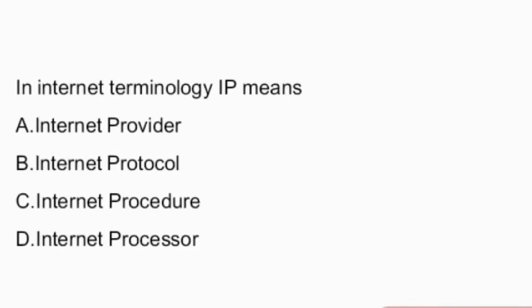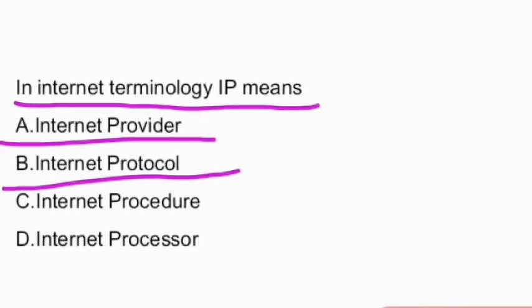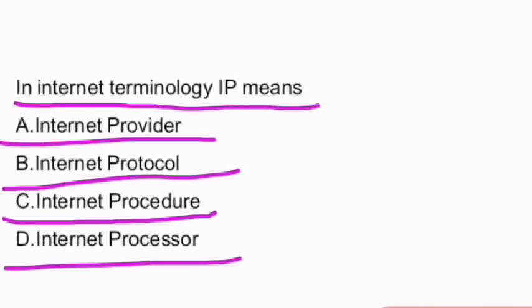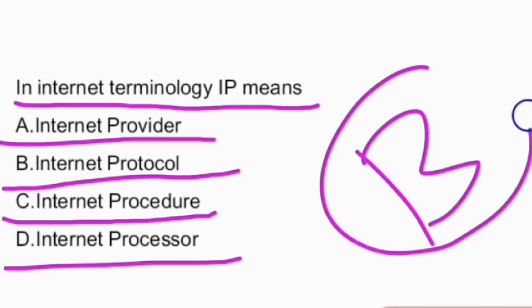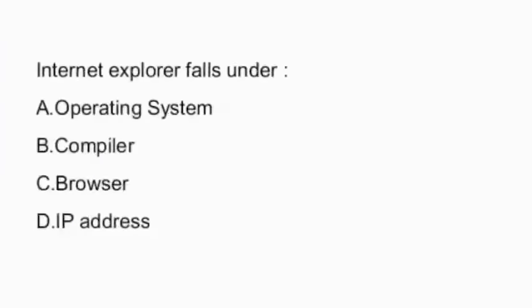Next question: in internet terminology, IP means what? The options given are internet provider, internet protocol, internet procedure, or internet processor. The answer is option B, internet protocol.